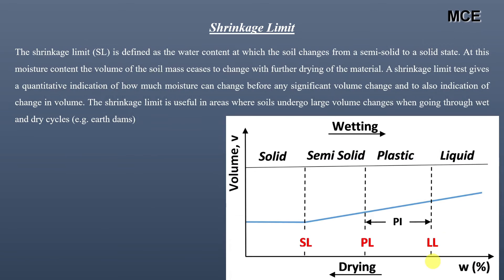Hello and welcome back to Master Civil Engineering. In this video we will learn how to find the shrinkage limit of a soil using the phase diagram. Shrinkage limit is defined as the water content at which the soil changes from a semi-solid state to a solid state. It is also the water content after which the volume of the soil mass remains constant with further drying.